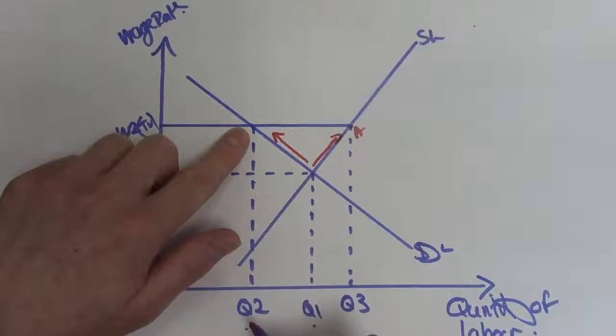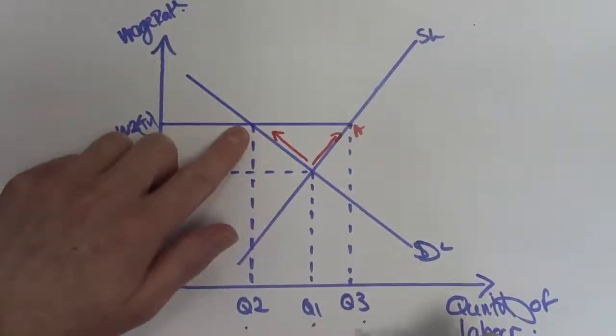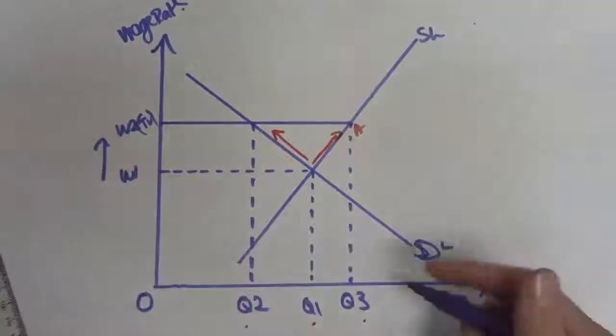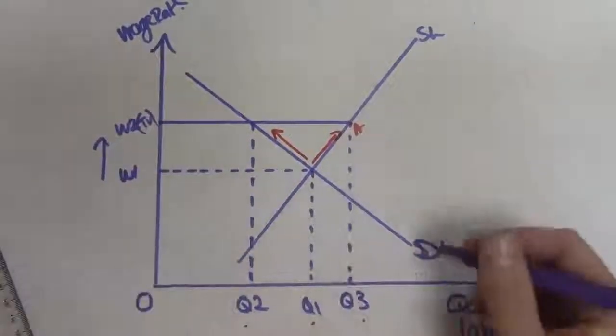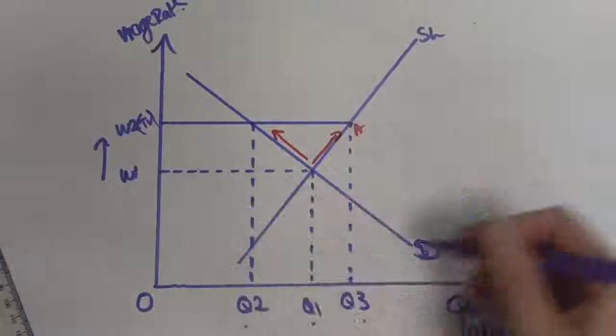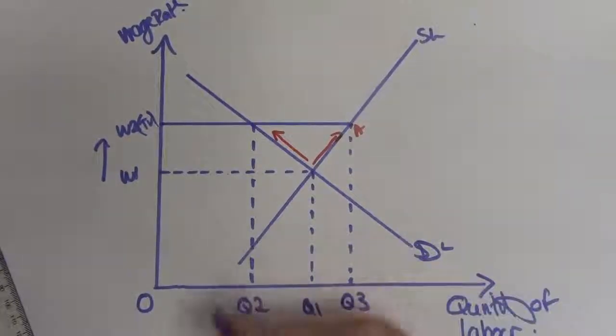The increase in the wage rate for the employees increases supply from Q1 to Q3. So we've got a bit of conflict here. One's going in one direction, the other's going in another. Bad for the firm, good for employees.